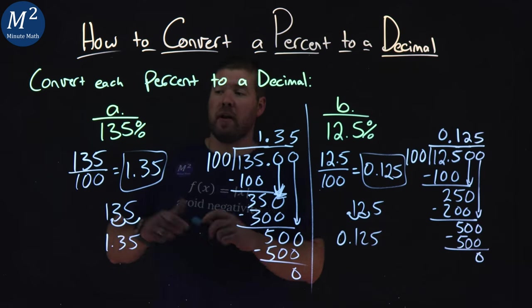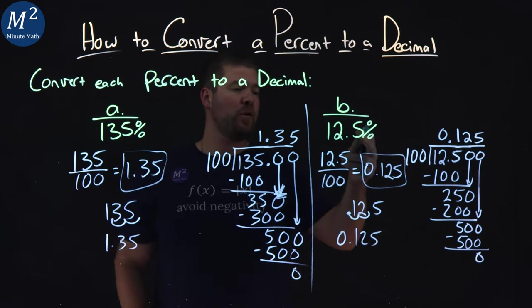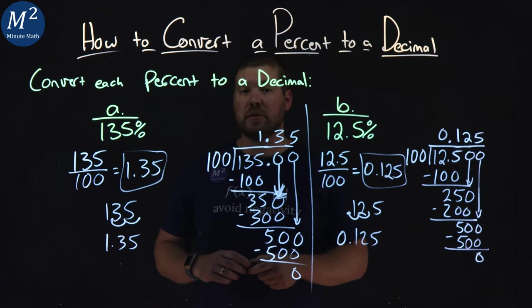So our final answer here is 135% as a decimal is 1.35, and 12.5% as a decimal is 0.125.